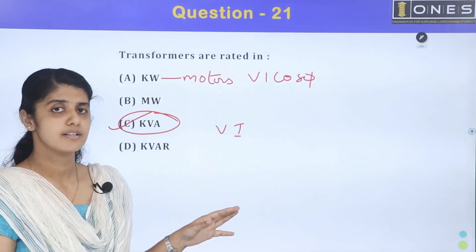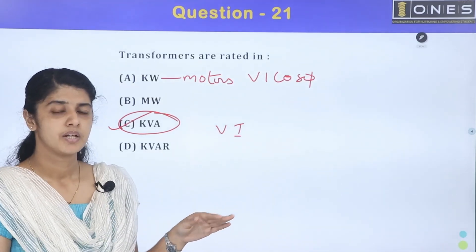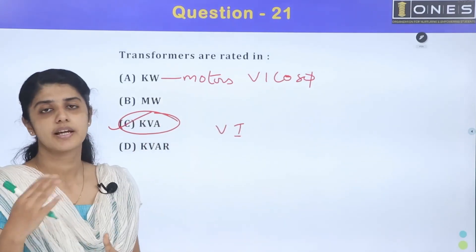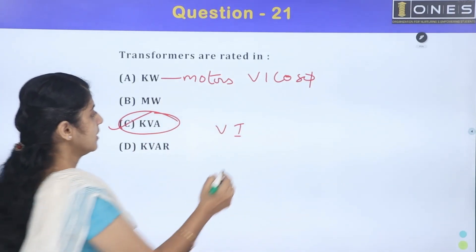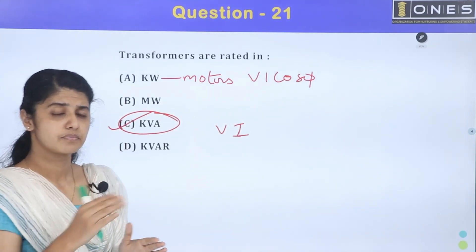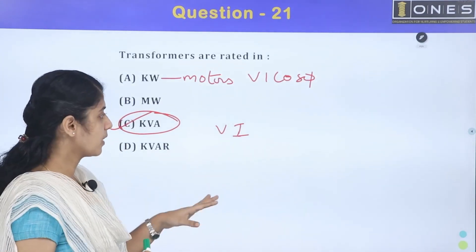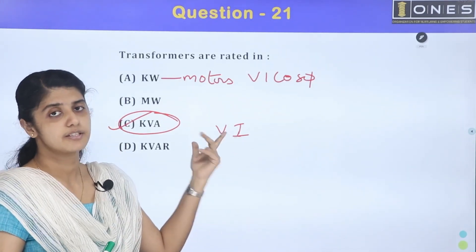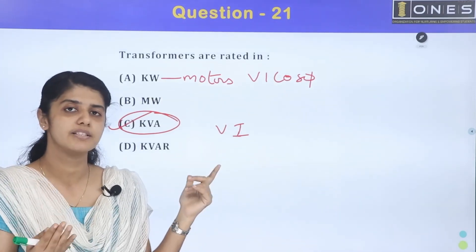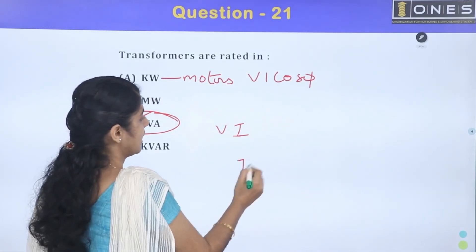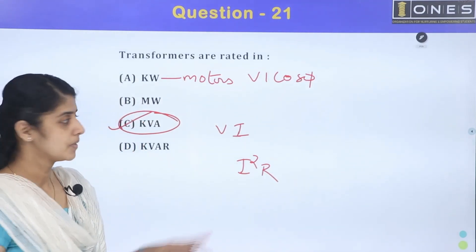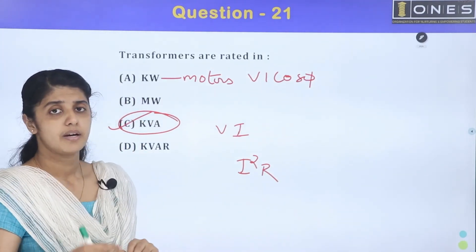In transformers, there are two types of losses. The loss in transformers is two losses: copper loss and core loss. Copper loss depends on current and is equal to i²r.